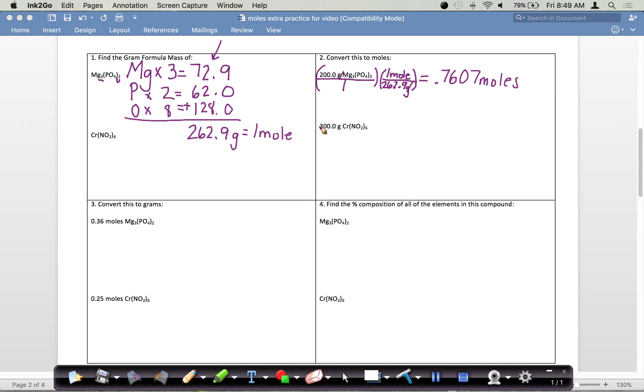If you're not in the advanced class, we did it a different way using the formula from table T. Number of moles equals given mass over the gram formula mass: 200 grams divided by 262.9 grams. The setup looked a little bit different, but 0.7607 moles is still the answer. Whether you use the formula from table T or the dimensional analysis process, you should get the same answer.